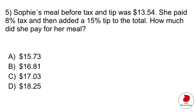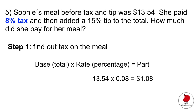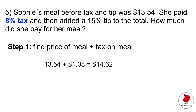The next question involves calculating tax and tip. Sophie's meal before tax and tip was $13.54. She paid 8% tax and added a 15% tip to the total. Step one: find the tax. Multiply $13.54 by 8% and you get $1.08. Add that to the meal price to get $14.62.